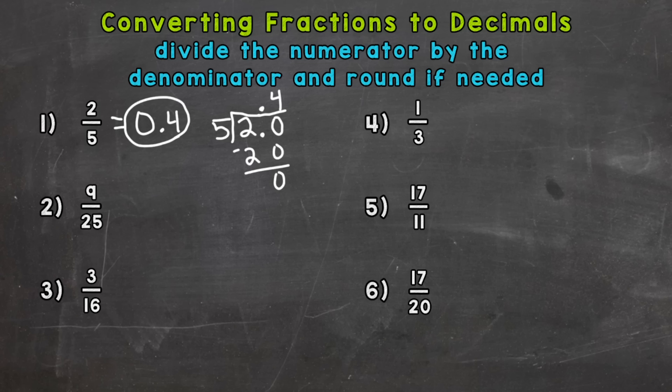Number 2, 9 twenty-fifths. I'll do this one by hand as well. So 9 divided by 25. So we need to extend our division problem with a decimal and a zero because we can't do 9 divided by 25 and get a whole number. We can't pull a group of 25 out of 9. So now we think of this as 90.